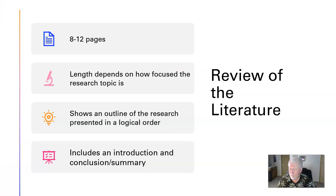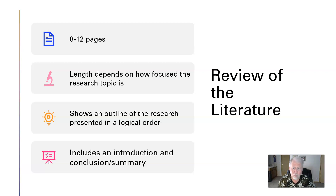As a rule of thumb, the review of the literature is usually about eight to twelve pages long. The length depends on how focused your research topic is — the broader the topic, the longer it takes to provide background; the more narrow, the more quickly you can do that. If you give me four pages, I'm going to say you need to do more work in terms of your research or how you're reporting it. If you give me twenty pages, I'm going to say that's what we need for a doctoral dissertation. You can do a great job with a master's thesis without twenty pages of lit review.